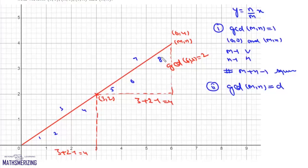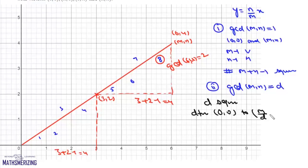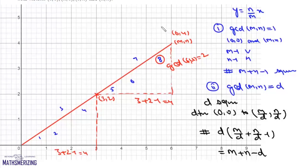Verifying: for (6, 4), 6 plus 4 minus 2 equals 8 squares. So in summary: if gcd(m,n) equals 1, number of squares equals m plus n minus 1; if gcd(m,n) equals d, number of squares equals m plus n minus d. Maximum intersections occur when gcd(m,n) equals 1.